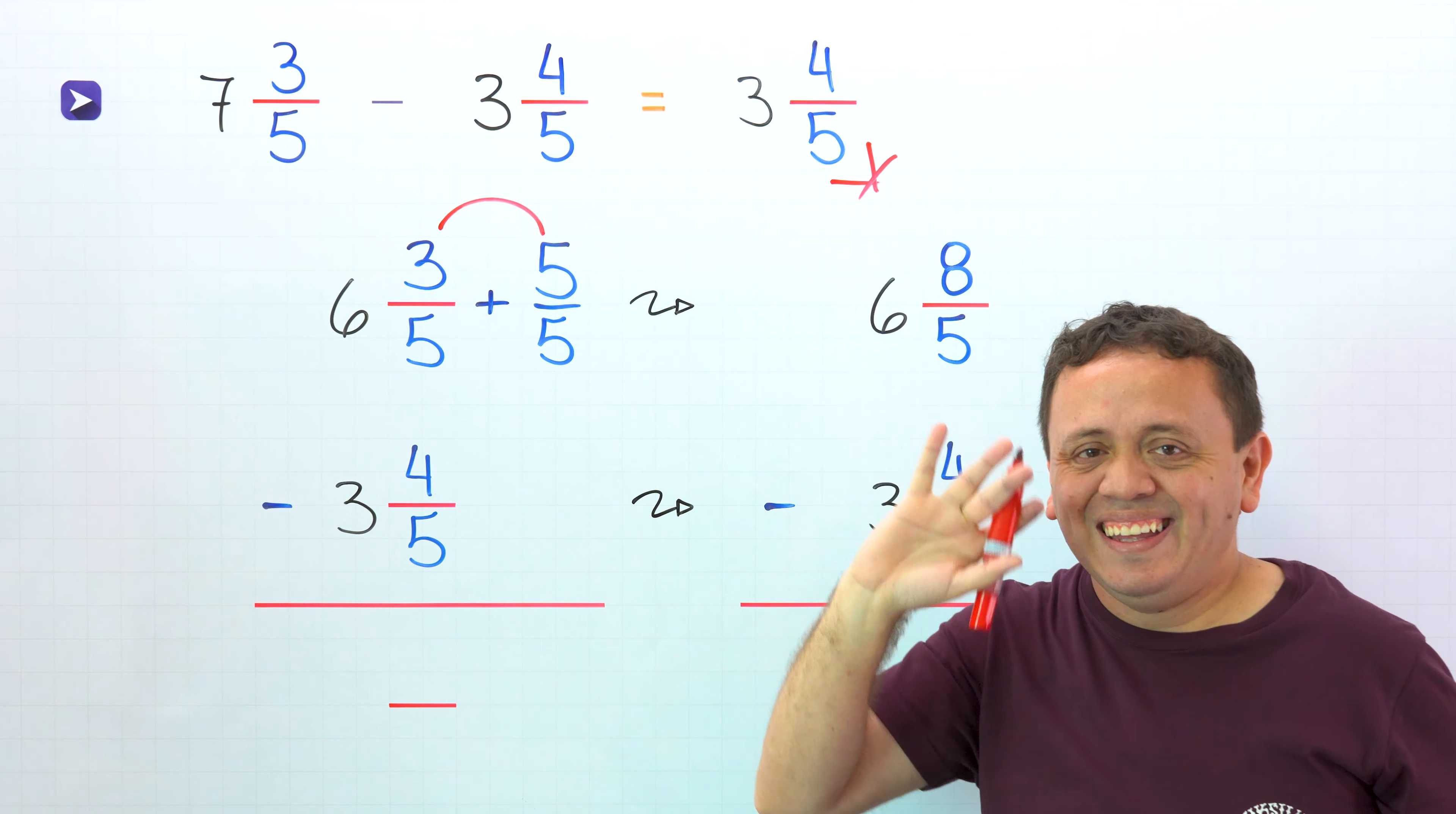Usually, we start by subtracting the fractions: 3 fifths minus 4 fifths. These two fractions have the same denominator, 5, and we continue by subtracting numerators, 3 minus 4. Hold on! We cannot subtract 4 from 3 because 4 is larger than 3. We have a little problem here.